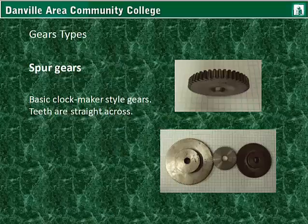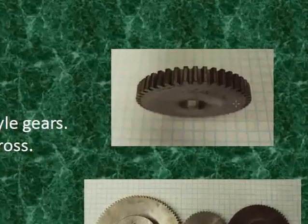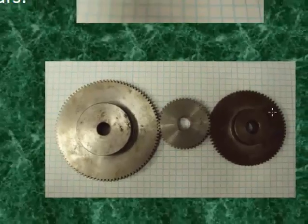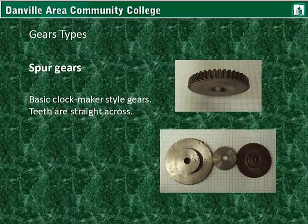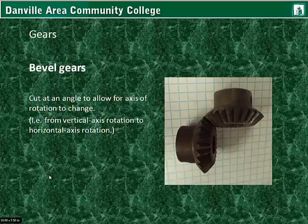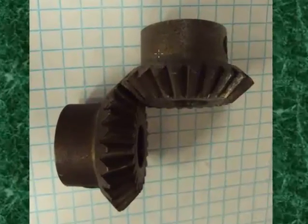Gear types. There are spur gears, which are the basic clockmaker style gears — the teeth are straight across. Here is a set of gears together. Bevel gears are cut at an angle to allow for the axis of rotation to change; in other words, from a vertical axis rotation to a horizontal axis rotation.